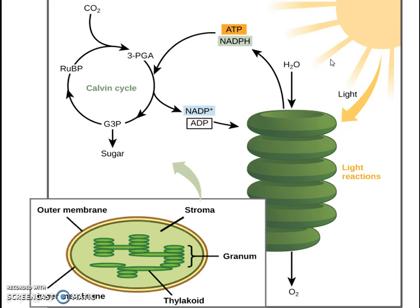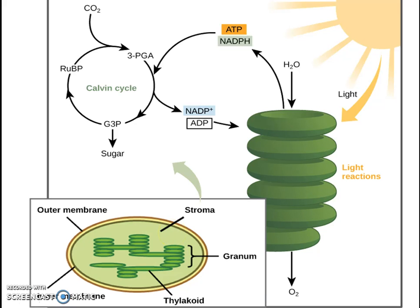The light reaction will provide energy for the carbon fixation or dark reactions. The end products of the light reactions — ATP and NADPH — in turn drive the carbon fixation or dark reactions. The light reactions are happening in the thylakoid region of the chloroplast, while the dark reaction is happening in the stroma region of the chloroplast.